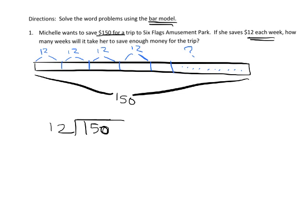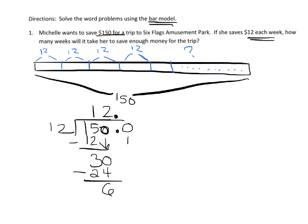12 goes into 15 one time — technically that's 15 tens because the 5 is in the tens place, but we think of it as 15. We get 3 left over, which is really 3 tens. When we drop that zero we have 30 left over. 12 goes into 30 two times — that's 24 — leaving 6 left over. Adding a decimal and a zero, we think of that 6 as 60 tenths. 12 goes into 60 tenths five times exactly, with no remainder.